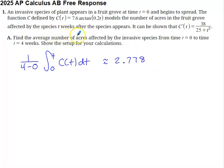Part A asks us to find the average number of acres affected by the invasive species from time zero to time four weeks. Show the setup for your calculation. So the average number of acres affected, C of T represents the number of acres affected. The average number of acres affected is going to be the average value of C of T on the interval zero to four.